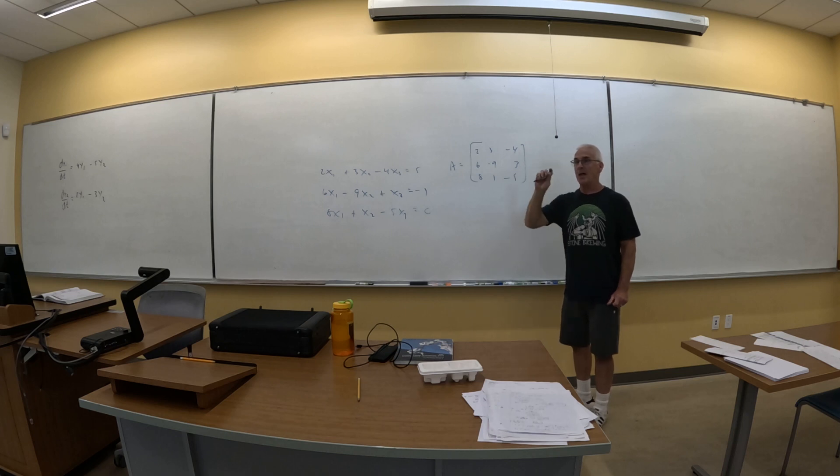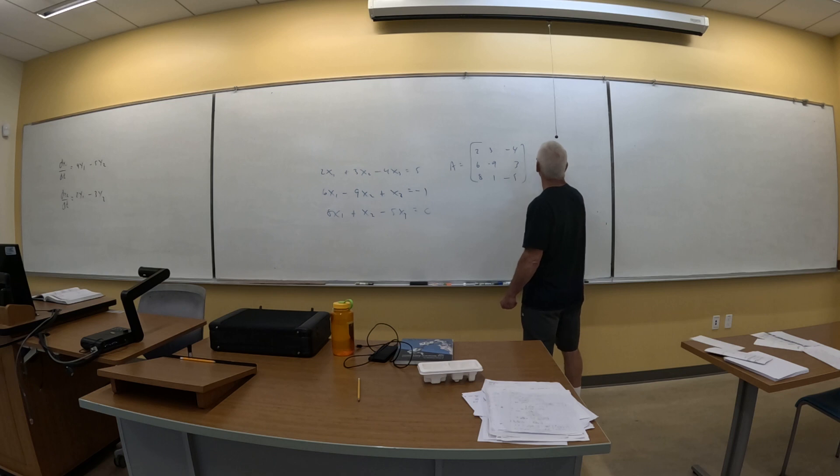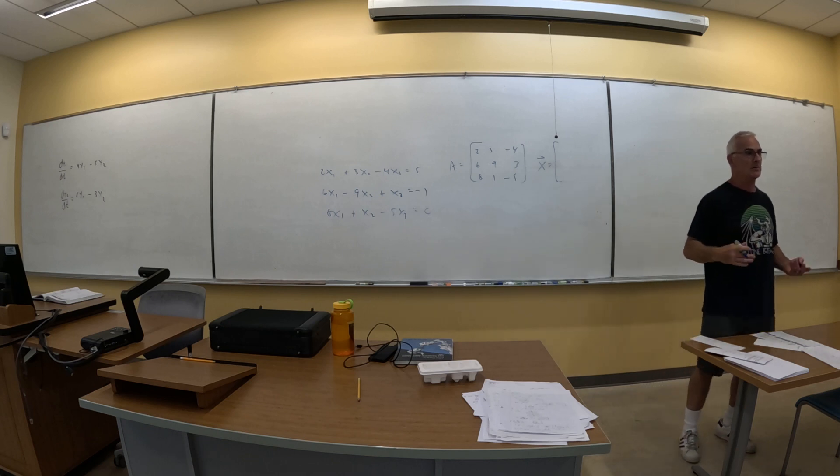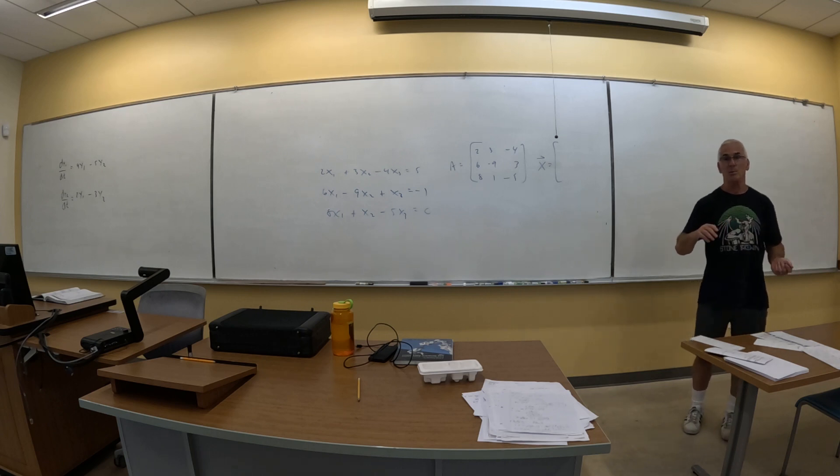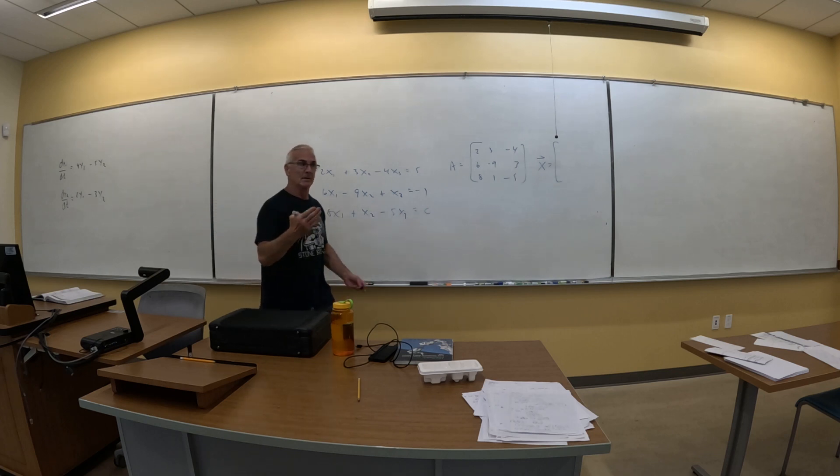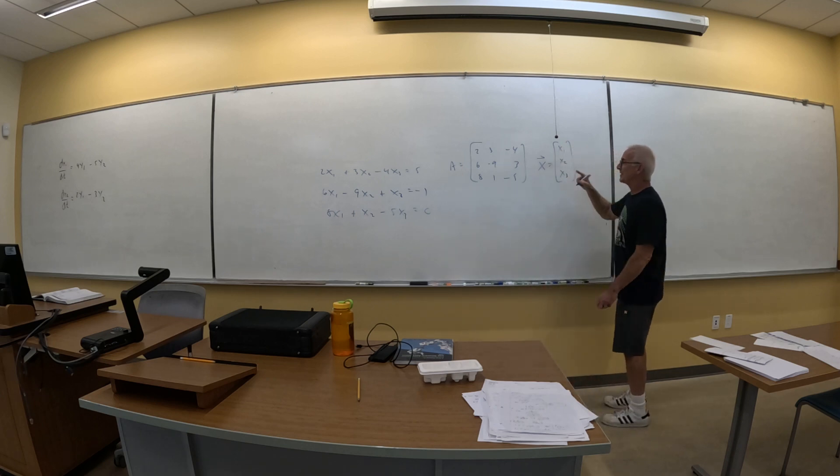And then we're going to identify the column matrix of variables. As you know, a column matrix is a vector. They are exactly the same thing. When do you use one versus the other? It's a context thing. They're interchangeable parts. They are exactly the same thing because we can show it from an algebraic standpoint. Plus they're isomorphic.